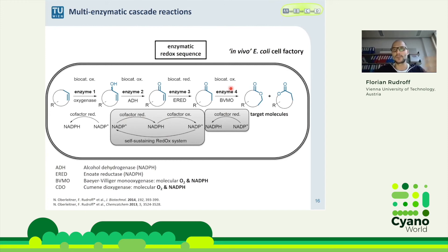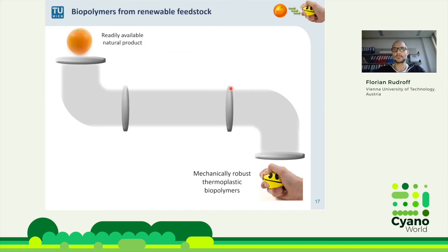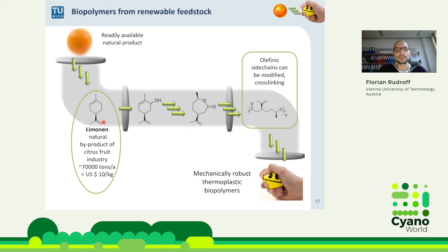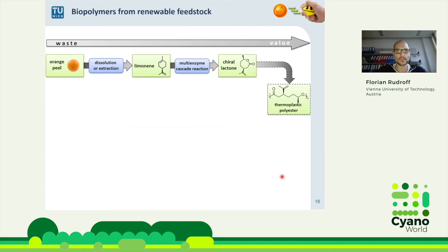We wanted to use a naturally occurring substrate from orange peel and produce a polymer — specifically the monomers for polymer production. The magic compound is limonene, extracted from orange peel. It's very cheap and produced in tons per year because we drink a lot of orange juice and the peel is waste. From limonene, through our multi-enzyme cascade, we reach lactone intermediates that can be polymerized to a mechanically robust thermoplastic biopolymer.